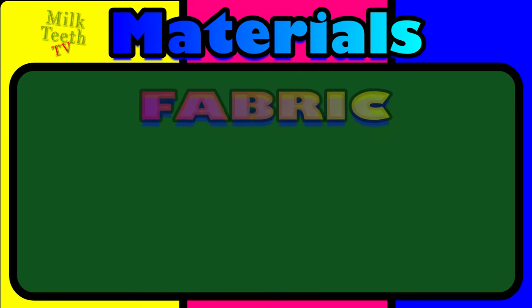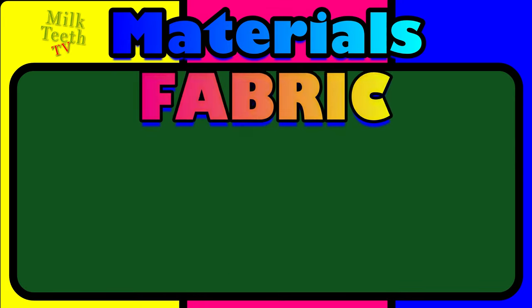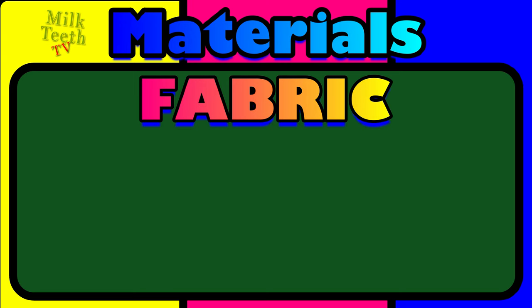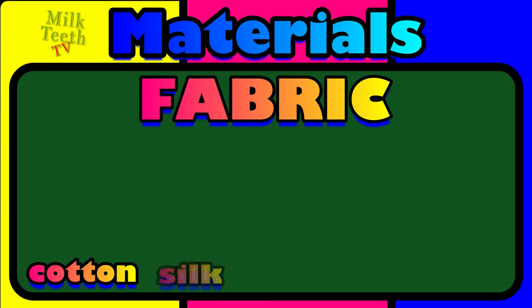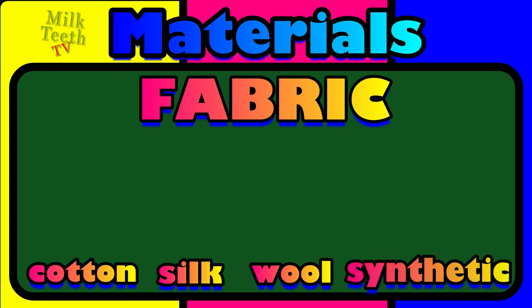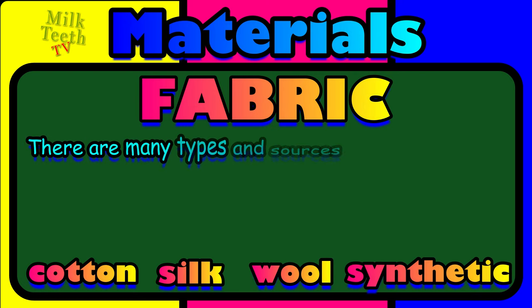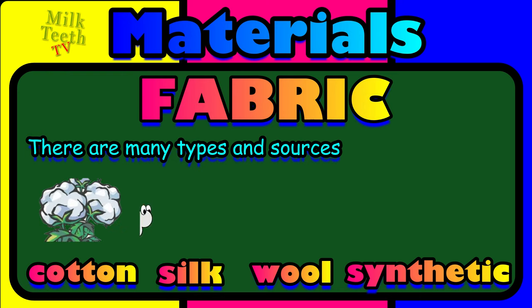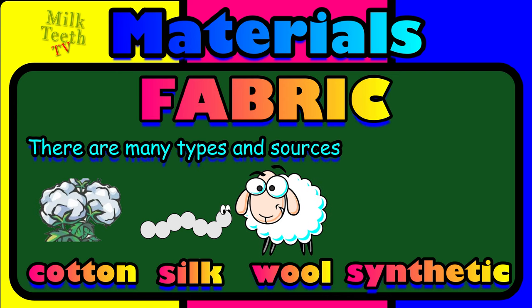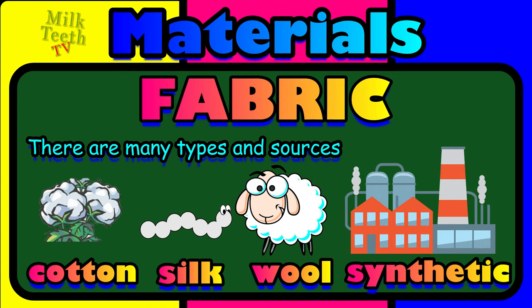The fifth type of material used to make numerous things around us is fabric. Fabric can be of cotton, silk, wool, or synthetic. We get cotton from the cotton plant, silk from the silkworm, wool from sheep, and synthetic fabric is made with chemicals in factories.